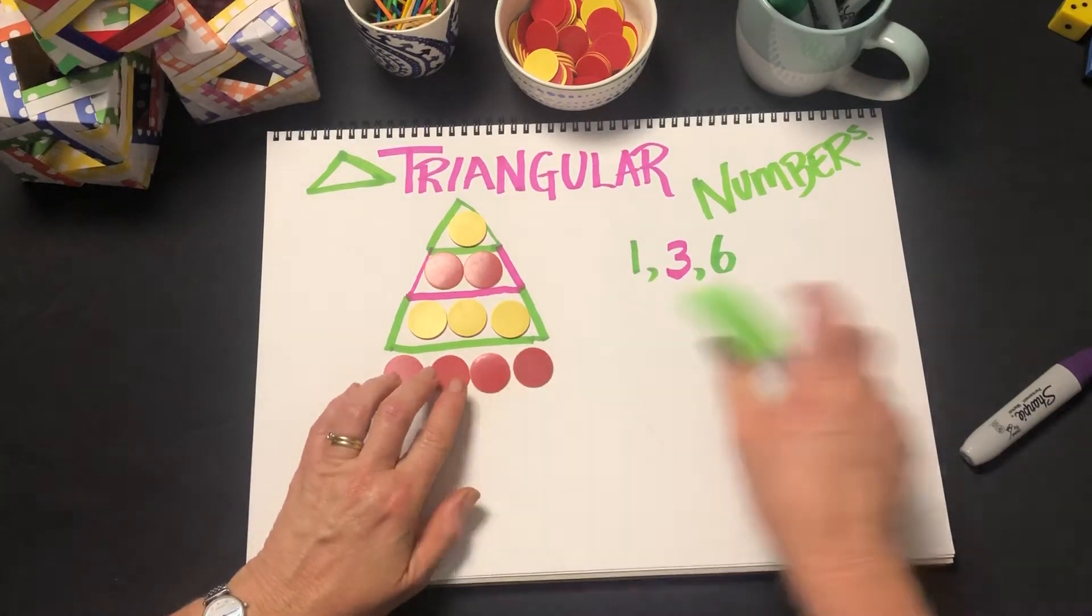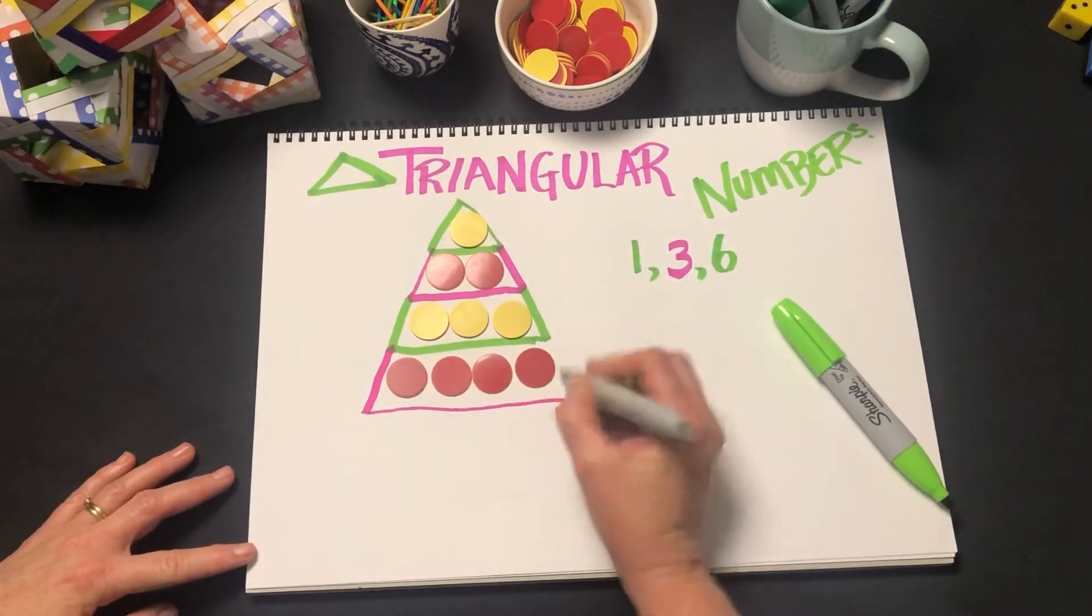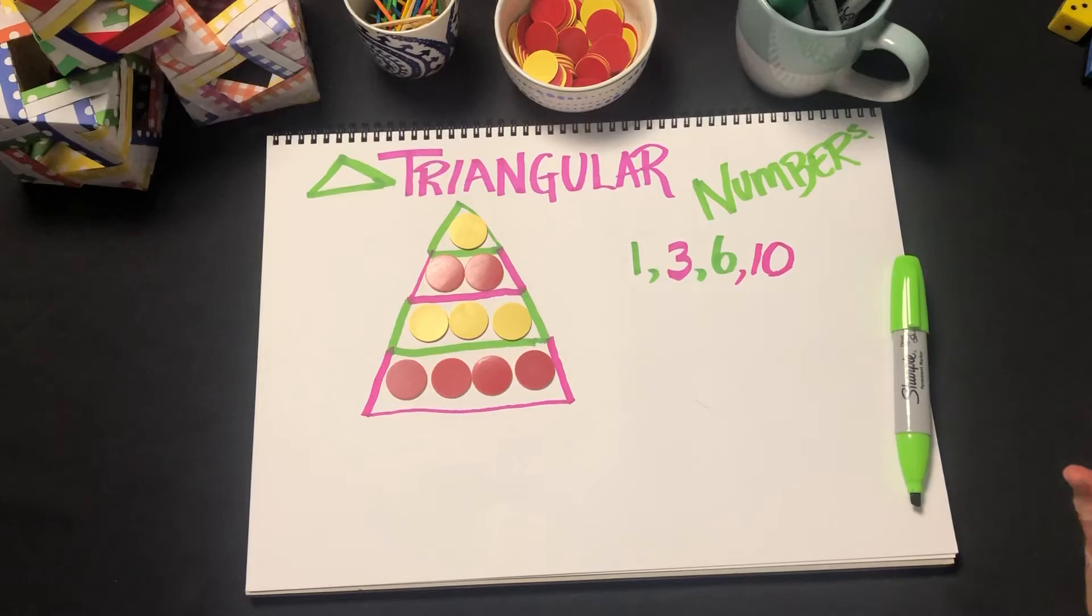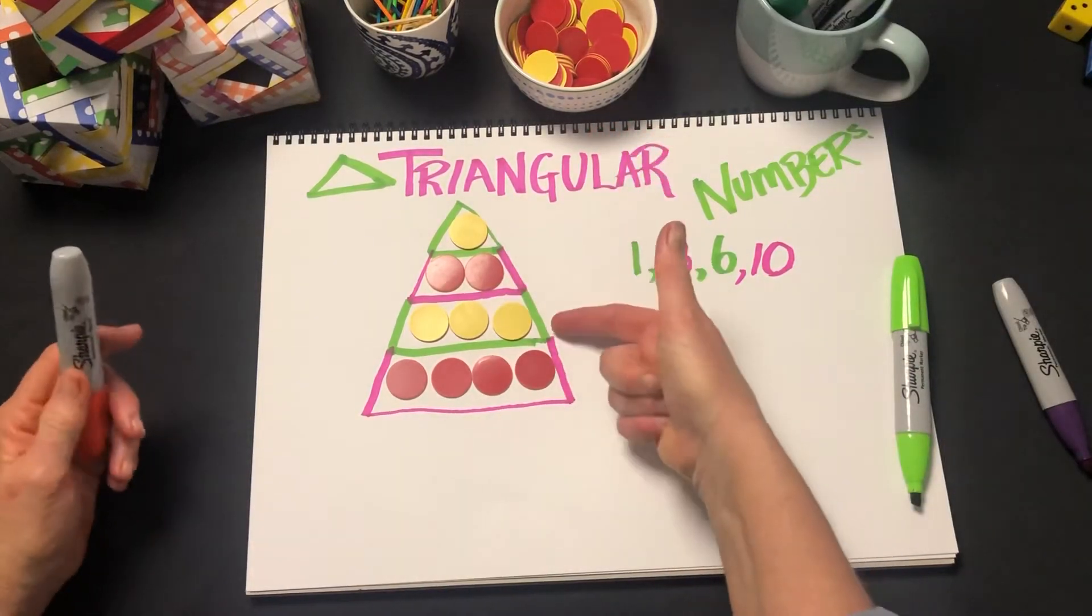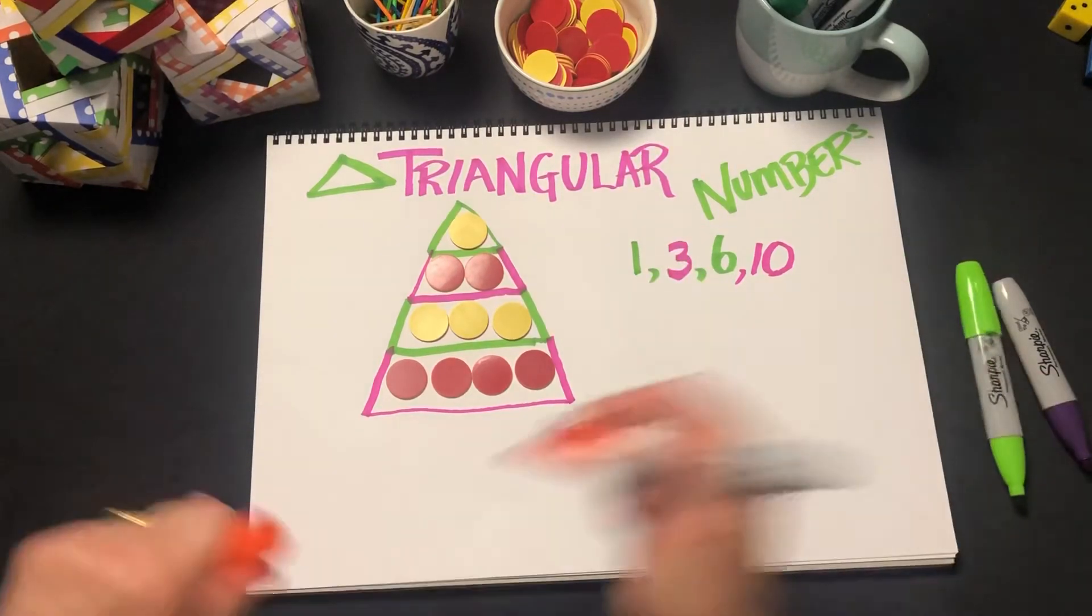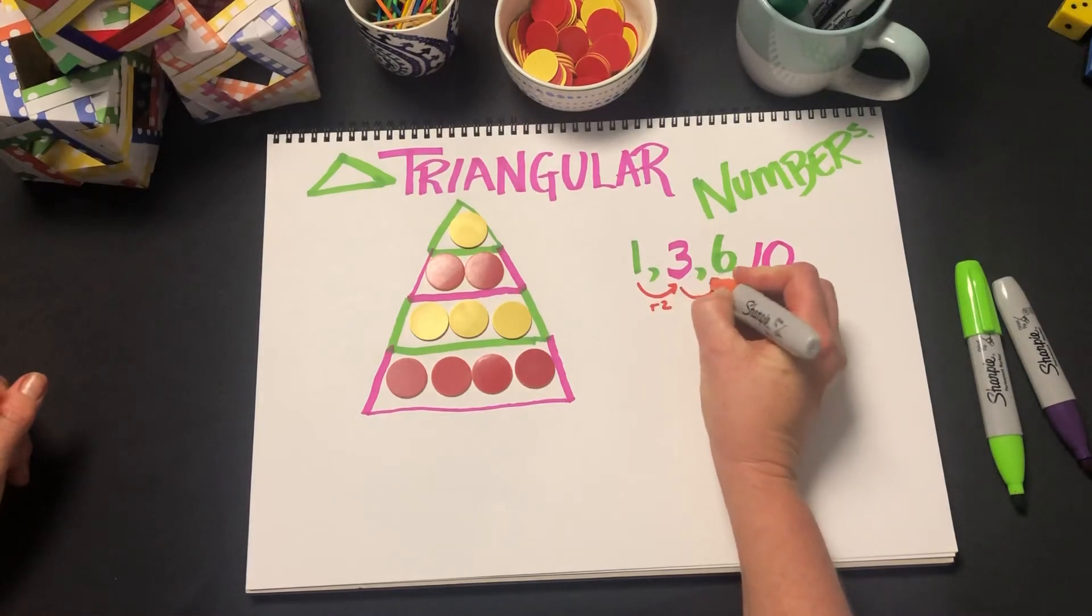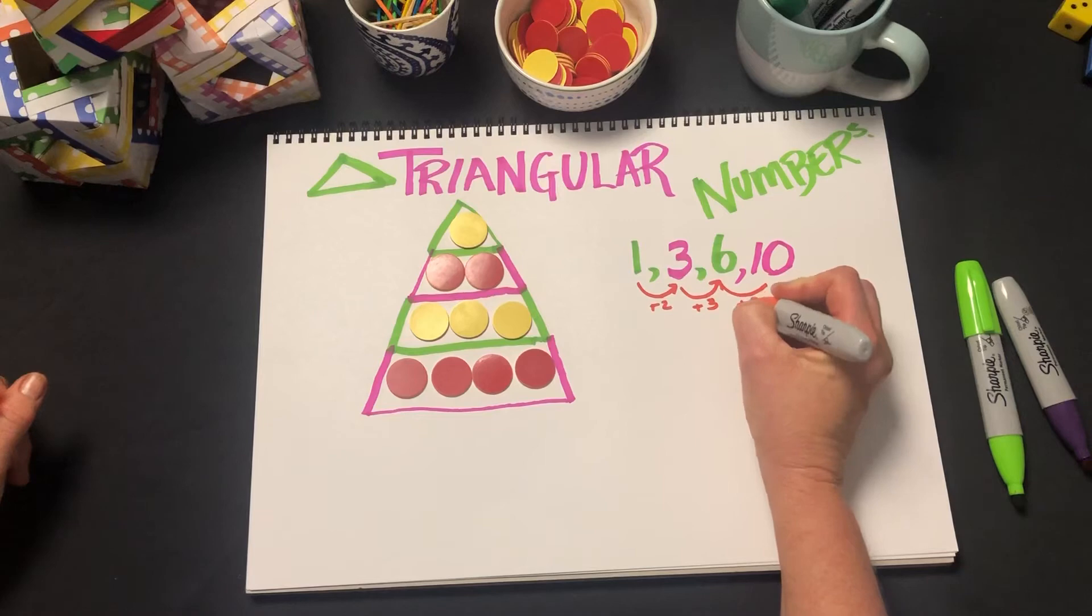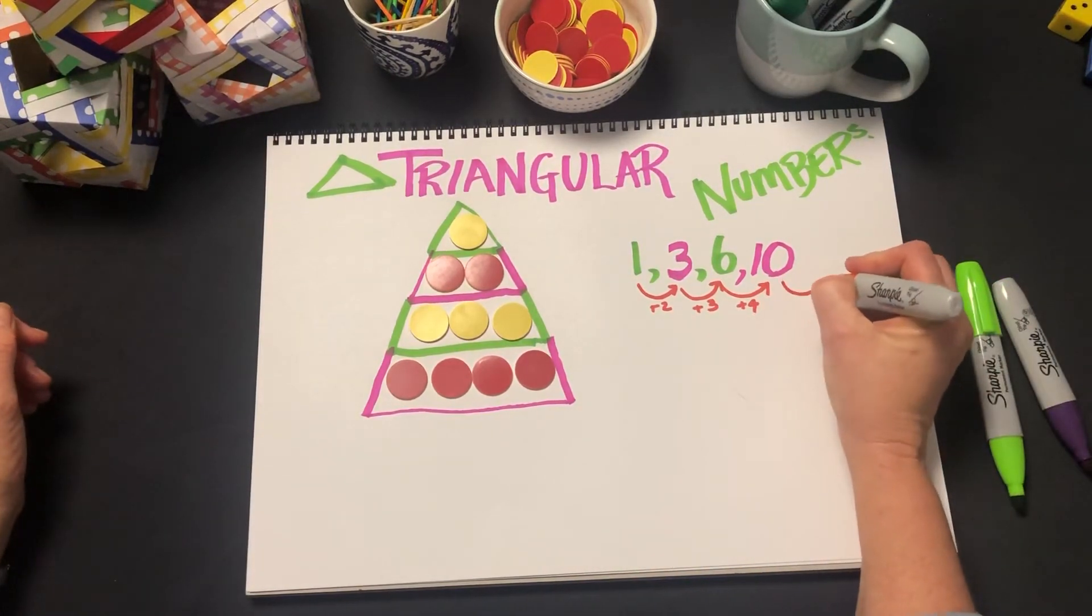We put four on the bottom and we have ten as a triangular number. What you would have heard me saying is about the number that we added each time: adding two, adding three, adding four.